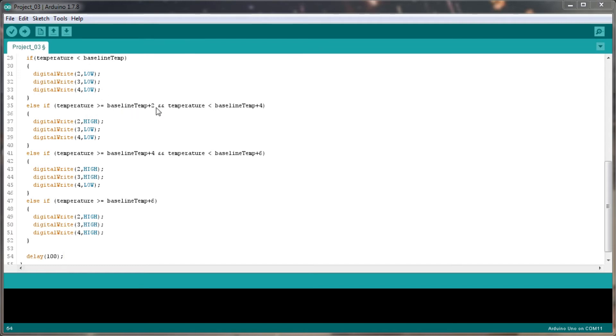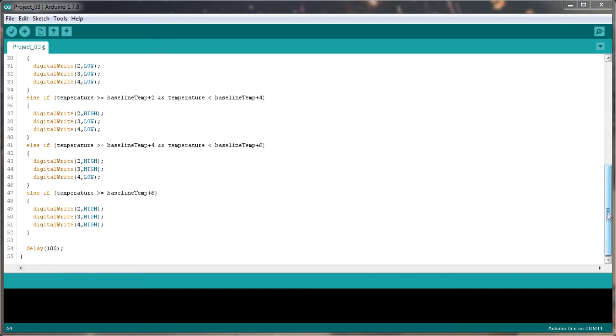Then if it's between 10 and 12, the first LED is going to light up, the second two are going to be off still. Then if it's between 12 and 14, it's going to light up 1. If it's between 14 and 16, it's going to light up 2, and then if it's above 16, it's going to light up all 3.